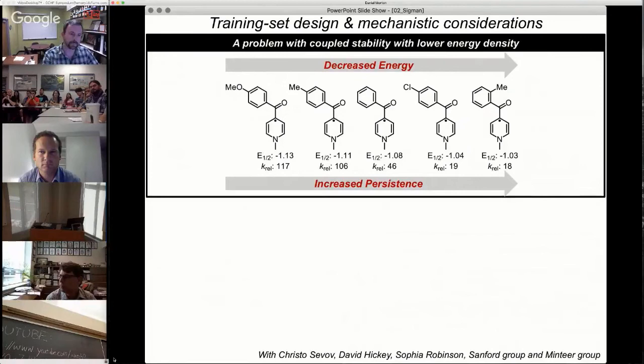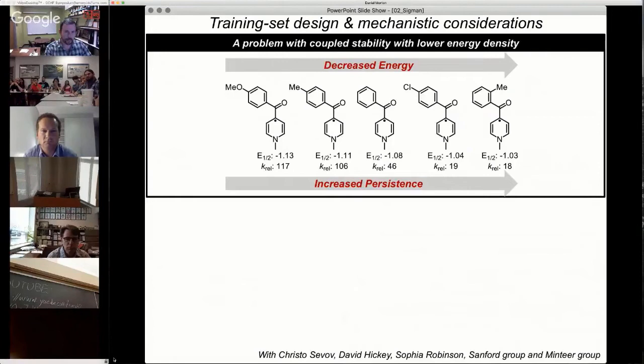If you look at this, K-REL is the relative-rated decomp, larger number, faster decomp. You can see you decompose this as a function of redox potential. E1/2 goes from negative 1.13 to negative 1.03 and the decomp rate is improved by order of magnitude. They're correlated. What does that mean? As you become more stable, it's less reactive.